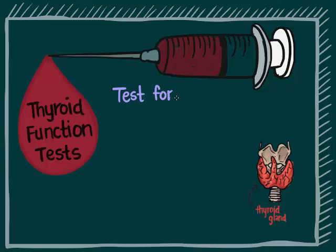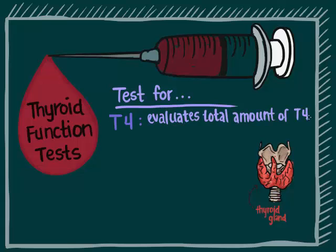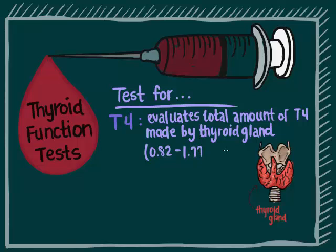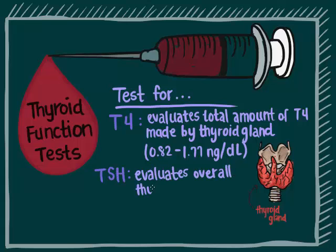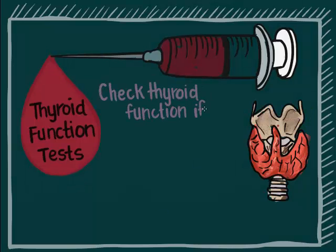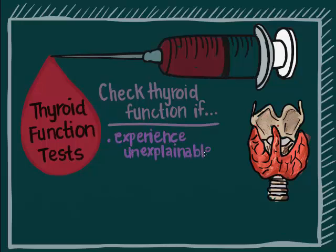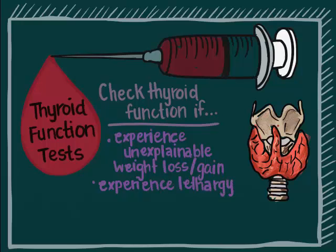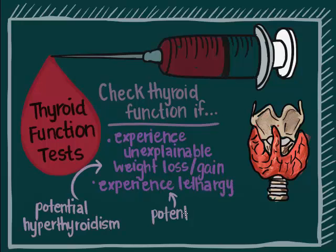T4 levels and TSH levels are usually tested. T4 levels are measured to evaluate the total amount of T4 made by the thyroid gland; the normal range is 0.82 to 1.77 nanograms per deciliter. TSH levels are used to evaluate overall thyroid function; the normal range is 0.45 to 4.5 microunits per milliliter. You may want to check thyroid function if you experience unexplainable weight loss or heart palpitations caused by potential hyperthyroidism, or unexplainable weight gain and lethargy caused by potential hypothyroidism.